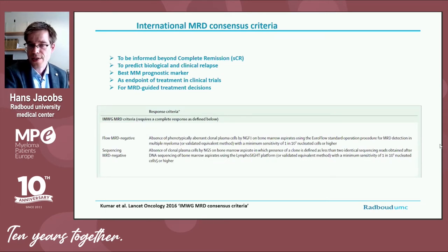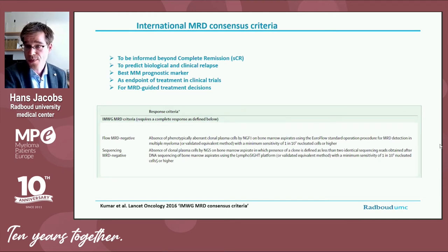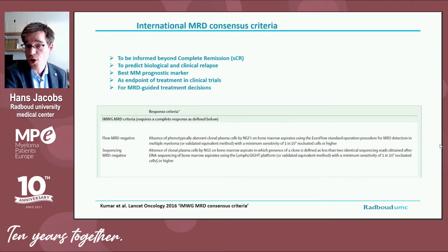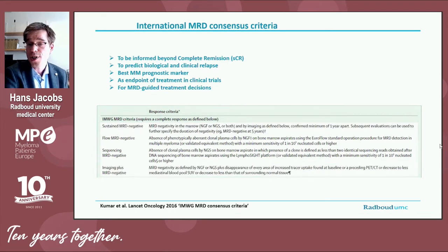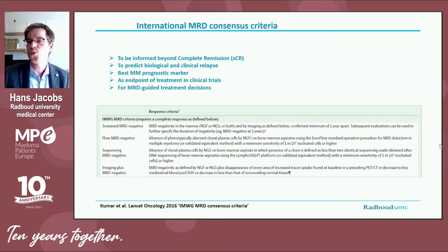As the importance of MRD evaluation grew, it became more and more important to harmonize and standardize these methods. International MRD consensus criteria were introduced stating that either flow cytometry or next-generation sequencing can be used, as long as the method is sensitive enough to detect one myeloma cell in 100,000 normal bone marrow cells. To be truly MRD negative, imaging must also be performed to ensure there are no myeloma processes growing outside the bone marrow. A category was also introduced for patients with sustained MRD negativity even after one year, which defines an even better prognosis.